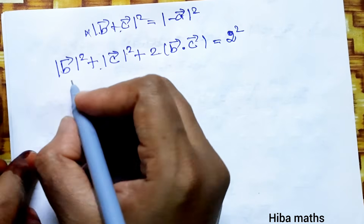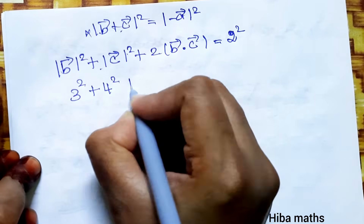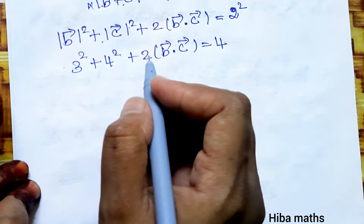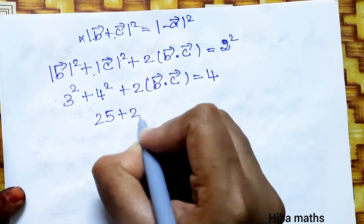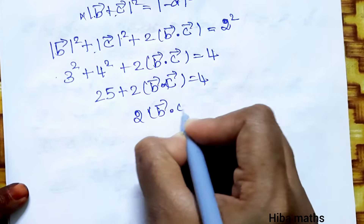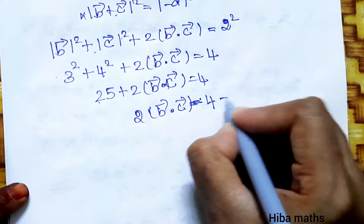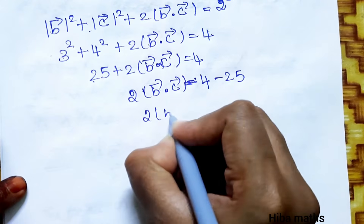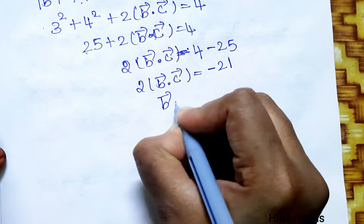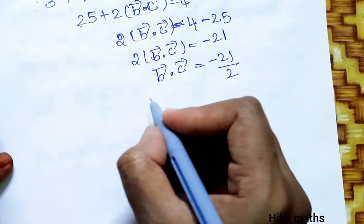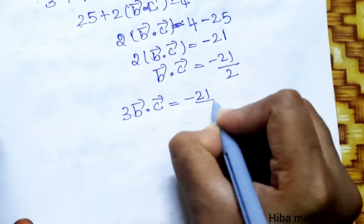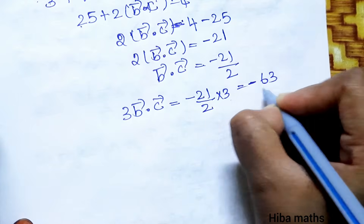Substituting values: b = 3, c = 4, a = 2. So 3 squared + 4 squared + 2(b·c) = 2 squared: 9 + 16 + 2(b·c) = 4, giving 25 + 2(b·c) = 4. Therefore 2(b·c) = −21, so b·c = −21/2. The second result: 3 × (b·c) = 3 × (−21/2) = −63/2.